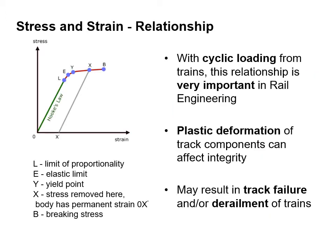With cyclic loading from trains, the relationship between stress and strain is very important in railway engineering. Plastic deformation of track components can affect integrity, and this may result in track failure and/or the derailment of trains.